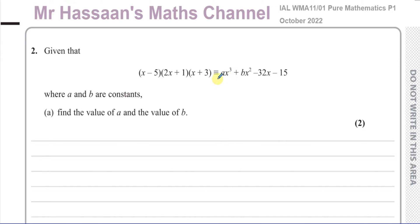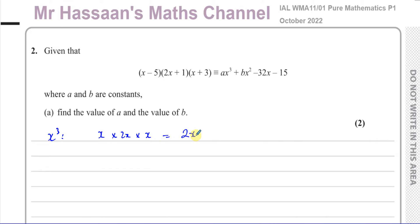For example, the x cubed term. If you think about the x cubed term, the way that the x cubed term will come about is if you multiply the x term from all three brackets together. So you have x times 2x times x. That's going to give us 2x cubed. So therefore, we can say A is equal to 2. That's the coefficient of x cubed.